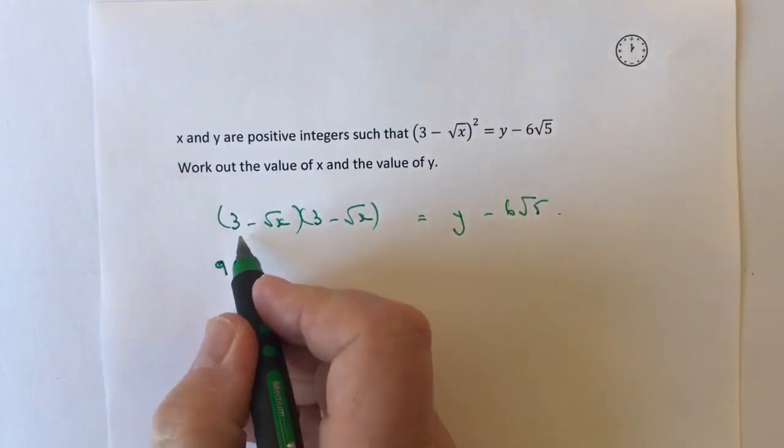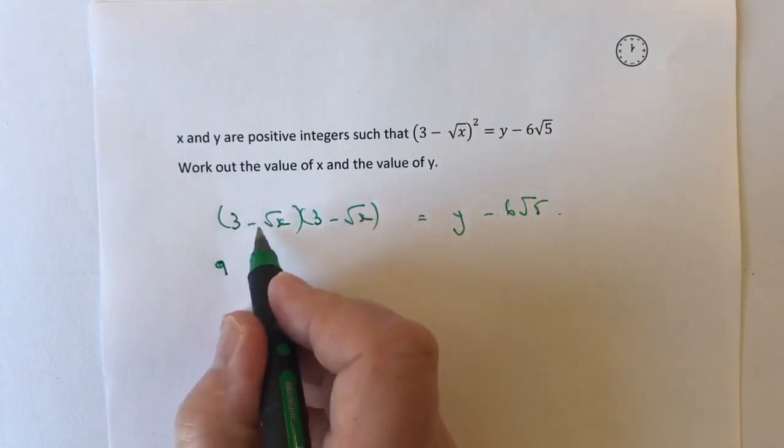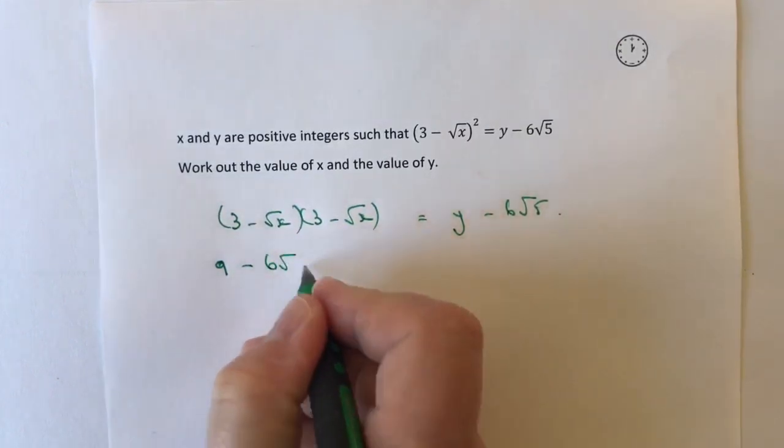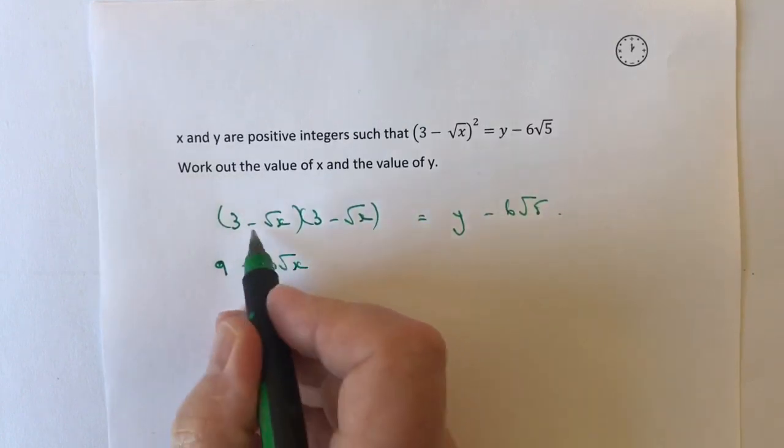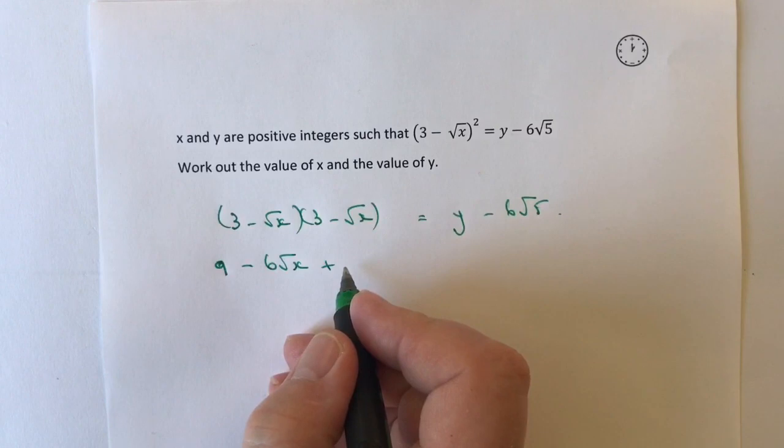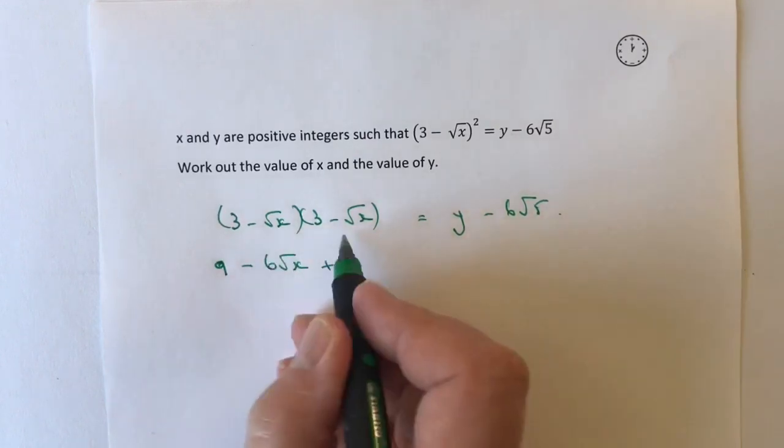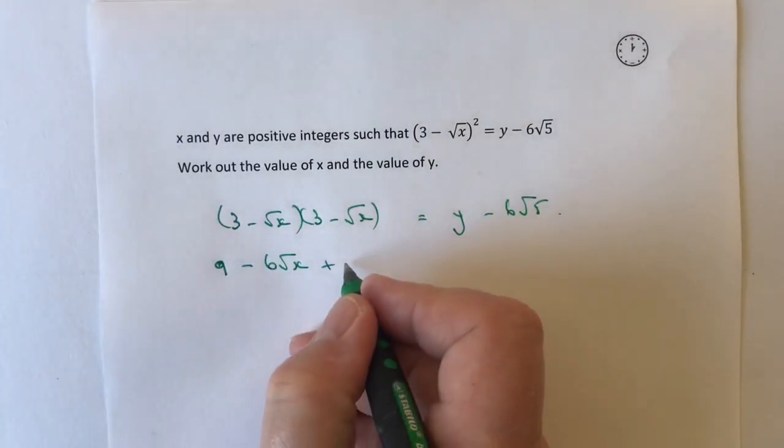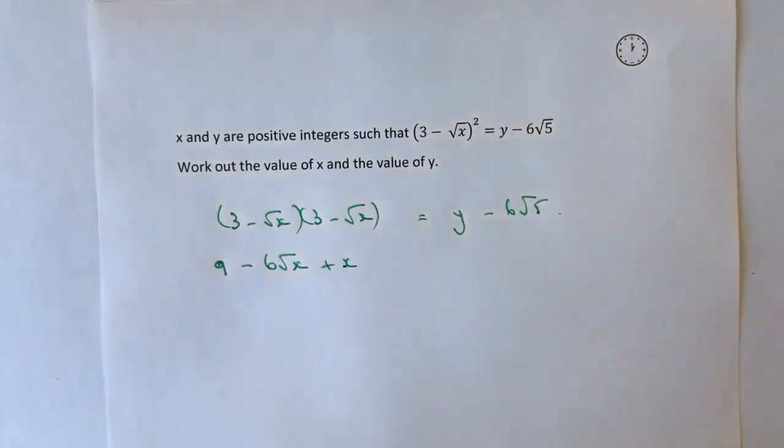And then I've got -3√x. -3√x is -6√x. And then I've got minus times minus is a plus. And a root times a root is going to be √x squared which is going to be just x on its own.